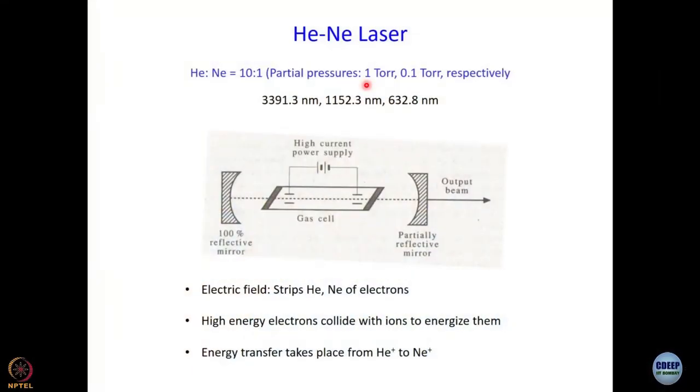What you do is produce high-energy electrons which collide with ions and transfer their energy to them, producing ions in their higher electronic levels. In the second stage, an energy transfer takes place from He⁺ to Ne⁺ — that is why you have to use a mixture of helium and neon. Remember, a two-level system will not give you lasing; you need three levels, you need to have population inversion. This population inversion is achieved by taking helium in excess, getting it energized, and then getting that energy transferred to neon, which now has energy levels suitable to give you the wavelengths we just mentioned.